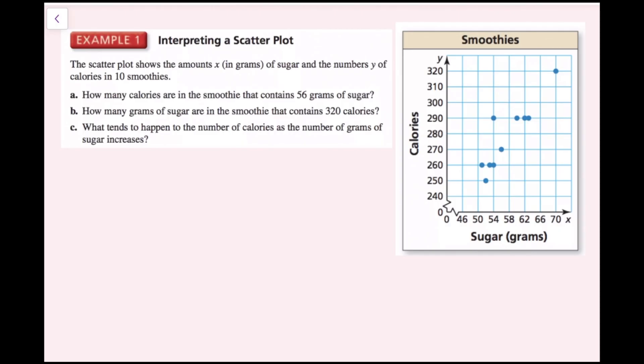For the first example, we have a scatter plot that shows the amount x in grams of sugar and the number y of calories in 10 smoothies. Here's our graph. Y axis is calories, x axis is sugar.